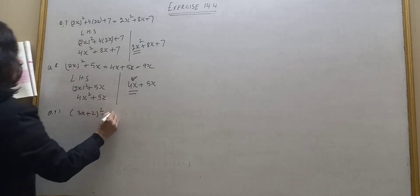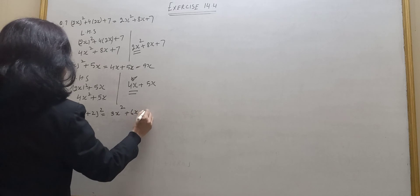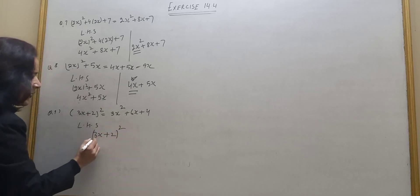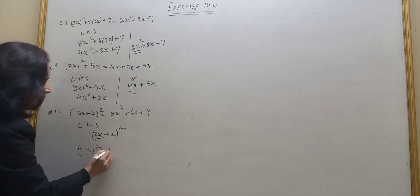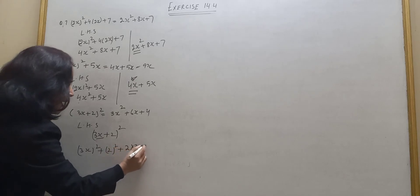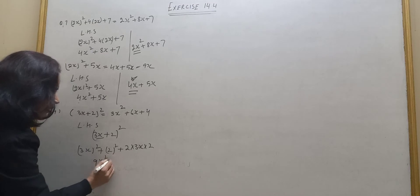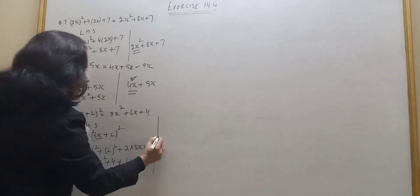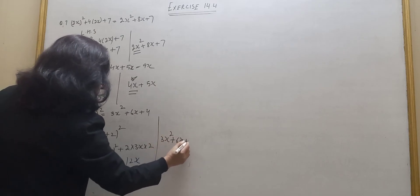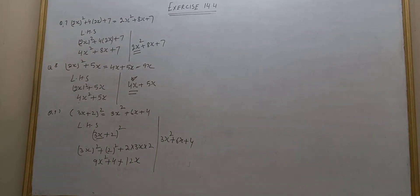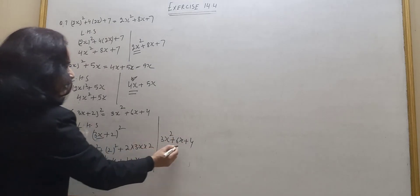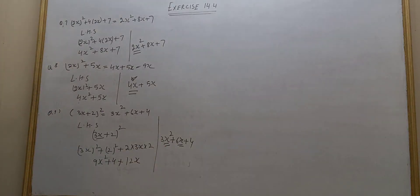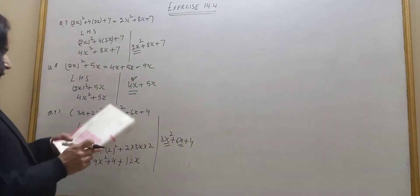Question number 9: 3x plus 2 whole square is equal to 3x² plus 6x plus 4. Left hand side using the identity (a+b)² = a² + 2ab + b²: it will be 9x² plus 4 plus 2 times 2 times 3x, which gives 9x² plus 12x plus 4. But right hand side has 3x² plus 6x plus 4. So the errors are here: it should be 9, not 3, and 12x, not 6x.